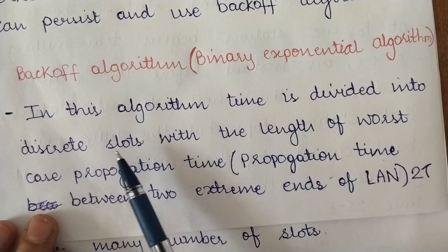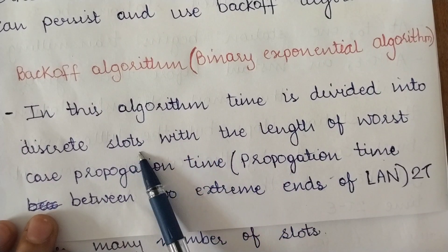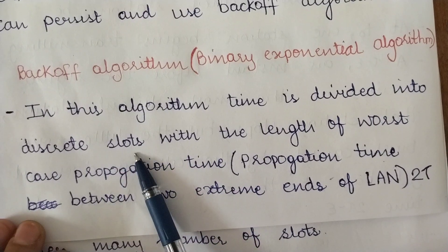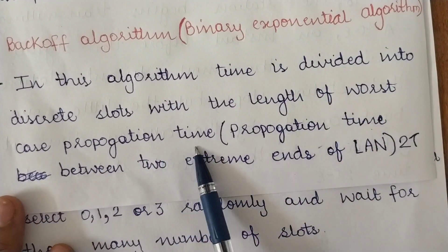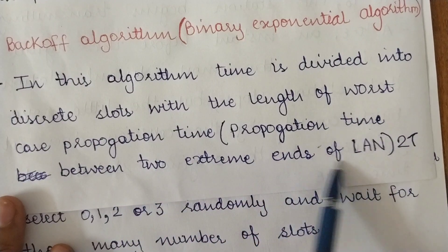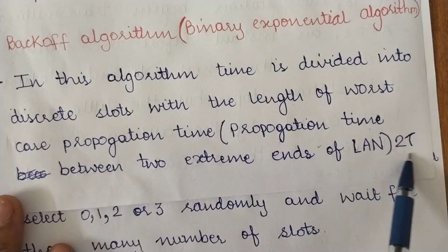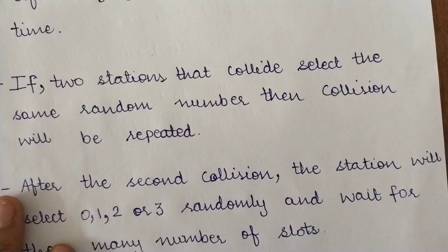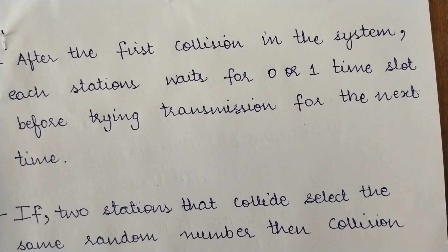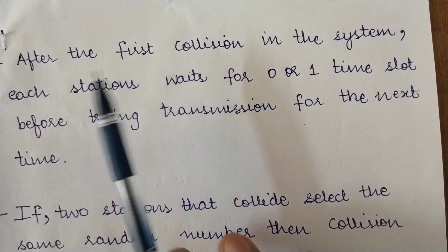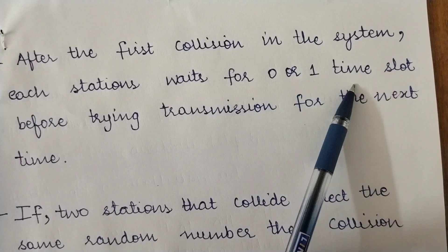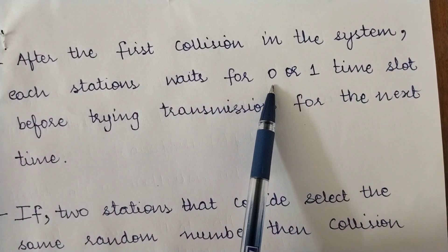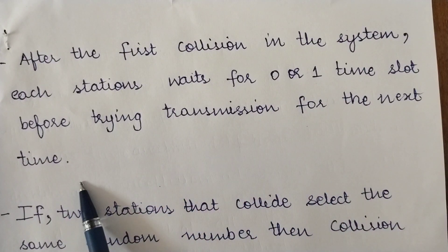This random waiting time is determined using the backoff algorithm — specifically the Binary Exponential Backoff algorithm. In this algorithm, time is divided into discrete slots whose length corresponds to the worst-case propagation time, which is twice the propagation delay, or 2×tau. After the first collision, each station waits for either zero or one time slot before attempting retransmission.